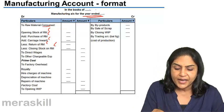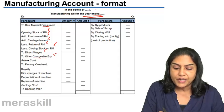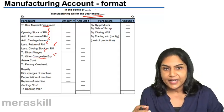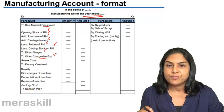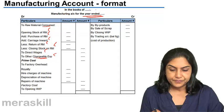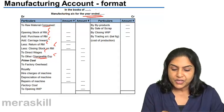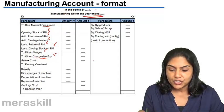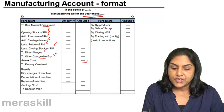Then we add direct wages and other chargeable expenses, which are direct expenses directly related to the product. A total of this gives us prime cost. The total gives us prime cost.